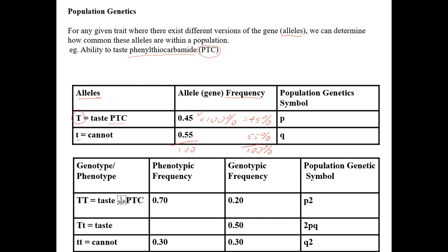Notice that in this particular example the recessive allele is actually more common within the population, and that's perfectly acceptable. Dominance has a strict definition — it means that allele overshadows the recessive allele — but it gives no indication whatsoever of how common it is within the population. The dominant allele could be more common, but here it is the recessive allele that is slightly more common.